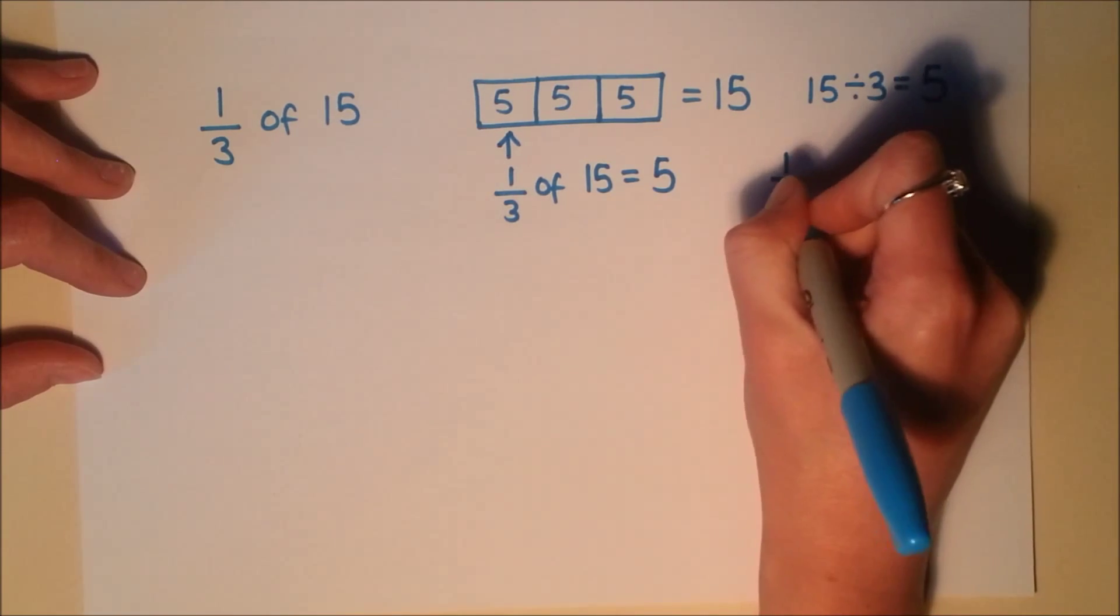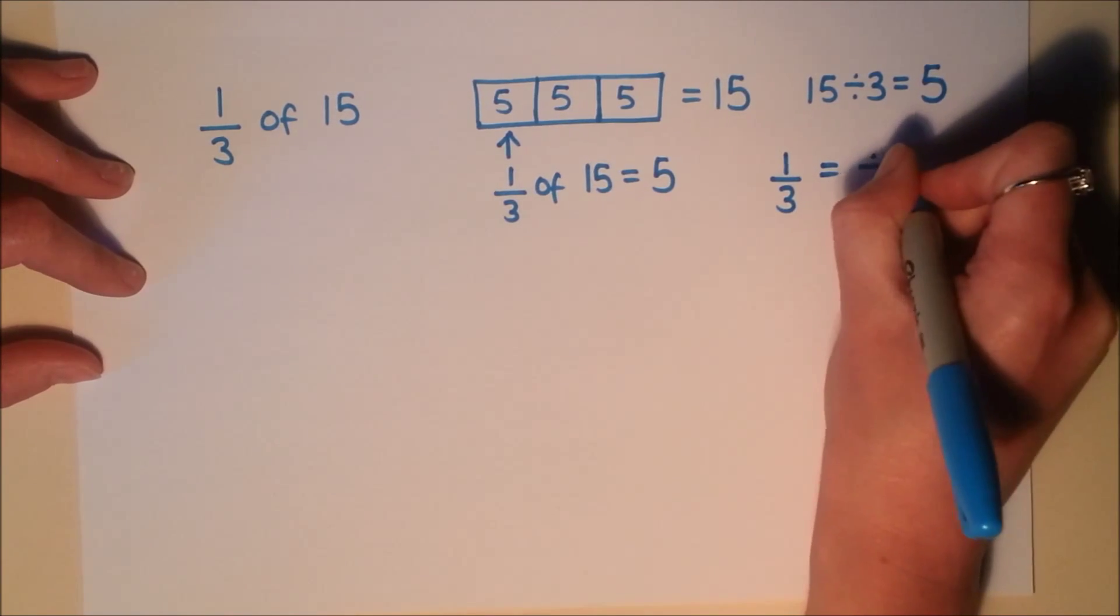It's worth pointing out that finding 1 third of something is exactly the same as dividing that amount by 3.